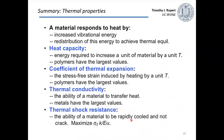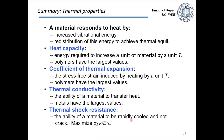To summarize the thermal properties portion: we discussed how material sets respond to heat by increasing vibrational energy and redistributing it toward thermal equilibrium. Heat capacity is the energy required to increase the temperature of a unit of material by one unit T — polymers had the largest values. Coefficient of thermal expansion is the stress-free strain per unit T — again polymers largest. Thermal conductivity is the ability to transfer heat — metals had the largest values. Thermal shock resistance is the practical property related to resisting rapid cooling without cracking.